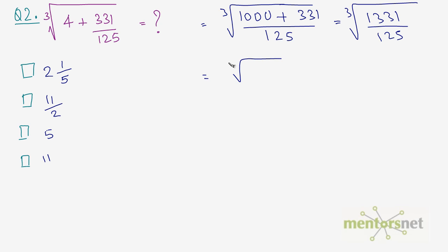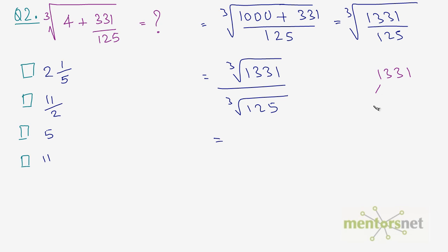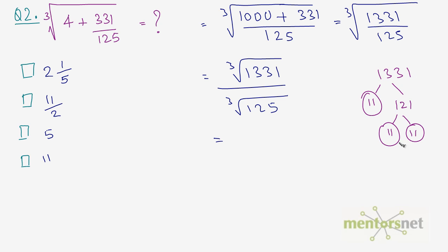This equals the cube root of 1331 divided by the cube root of 125. Let us find the prime factors of 1331. It cannot be divided by 2, 3, 5, or 7. Dividing by 11 gives 121, and 121 is 11 squared. So 1331 is 11 cubed, meaning the cube root of 1331 is 11. The cube root of 125 is 5.